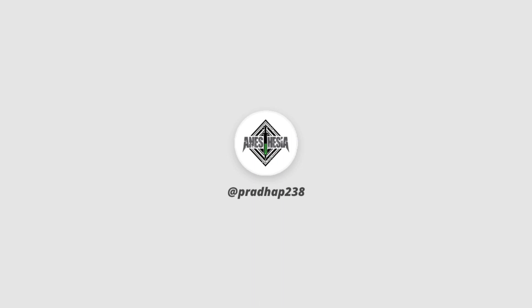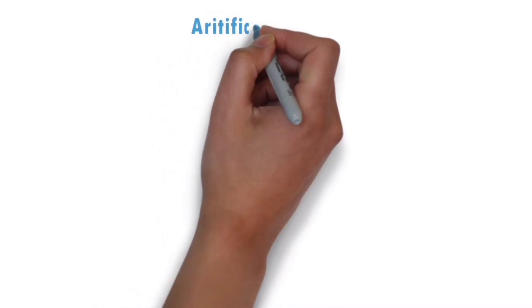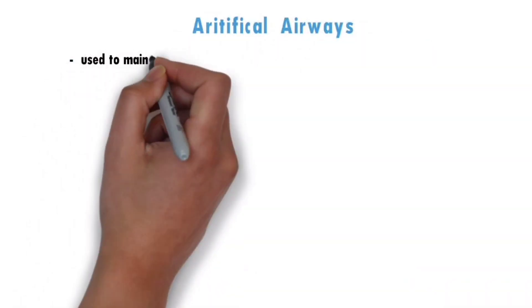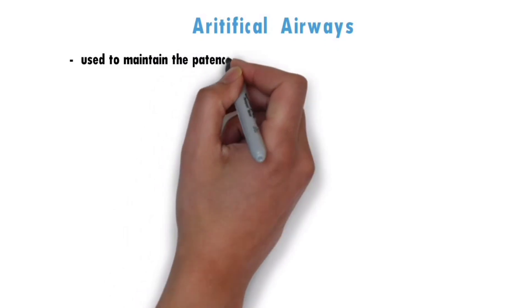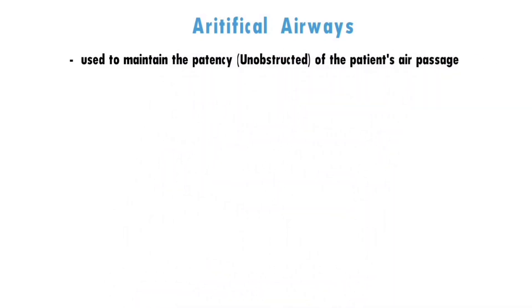Now we'll get on to the video. Artificial Airways — these are devices that are used to maintain the patency of the patient's air passage.